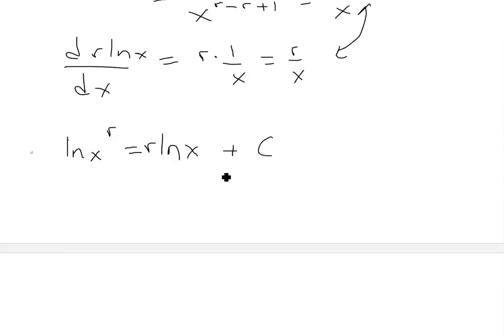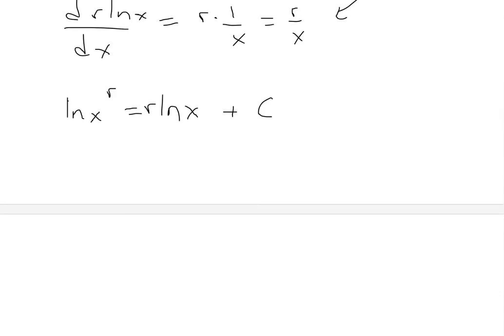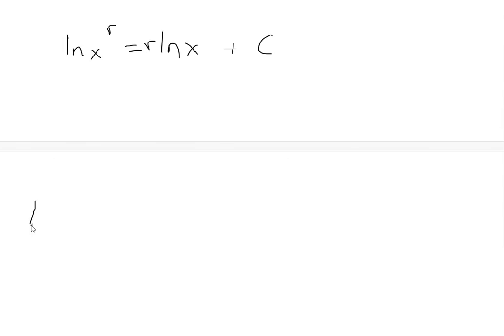But now when we have this case, we could solve for this constant by just putting in any value for x. But we know if we put in x = 1, we could quickly find what c is. So if we plug that in, we'll have ln(1^r) = r*ln(1) + c.